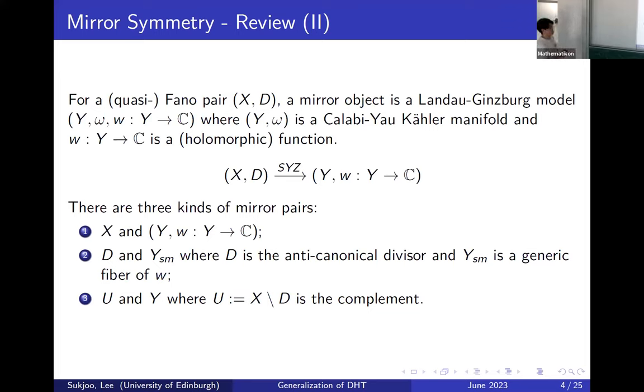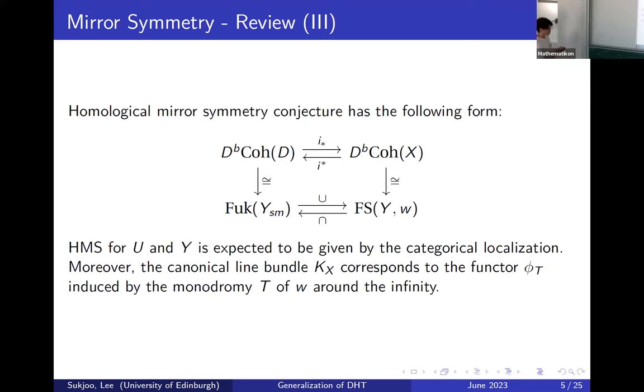An interesting question is how these three are related. One way to understand this from mirror symmetry is that the homological mirror symmetry conjecture is stated not only as an equivalence of categories, but we also want to construct some functor, and this equivalence somehow has to go with the monodromy.